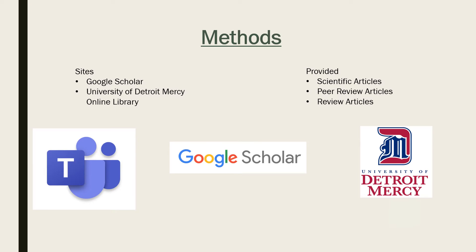My research consists of reading research literature. Two main sources used were Google Scholar and the University of Detroit Mercy's online library, which granted access to articles I could not access on Google Scholar. These sources provided review, scientific, and peer-reviewed articles. I inspected articles from certain domains for trustworthy information and recent articles from the year 2000 to the present. Our lab also had weekly meetings using Microsoft Teams and outside communication for recommending articles.